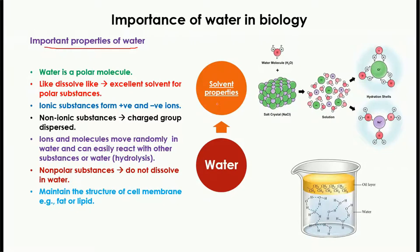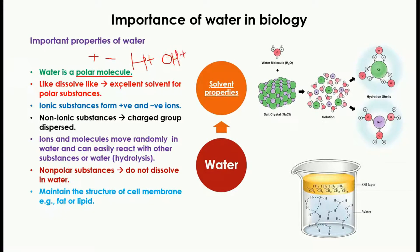The first important property of water is that it is a very good solvent. The chemical nature of water is that it is a polar molecule, meaning it has positive and negative poles — a positive hydrogen end and a negative hydroxyl end. Because of this polarity, water is an excellent solvent for polar substances, since like dissolves like.